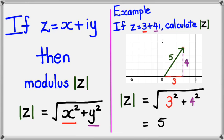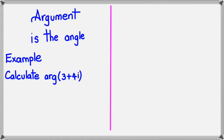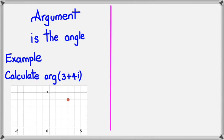Okay, now looking at the argument. Argument is the angle between the horizontal axis and the complex number itself. So if I want to calculate the argument of 3 plus 4i, the first thing I want to do is plot the complex number. The horizontal axis going towards the right is the blue line, and the green line is of course the complex number itself. And you're basically looking for the angle between the blue line and the green line. So that angle right there. And that angle is called the argument.